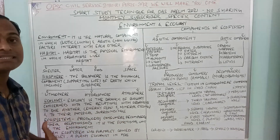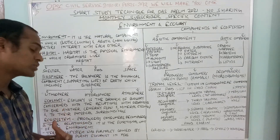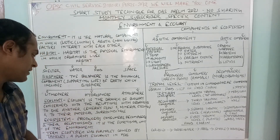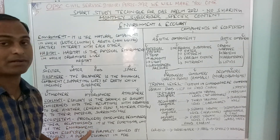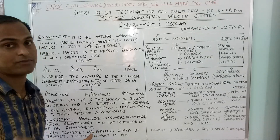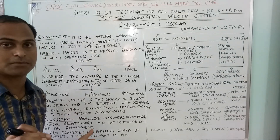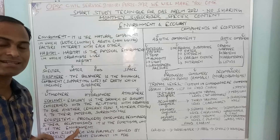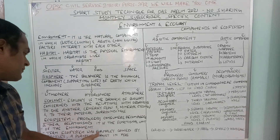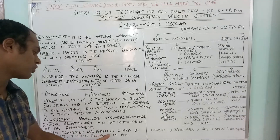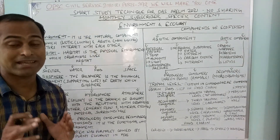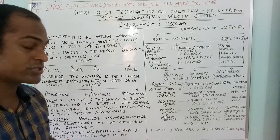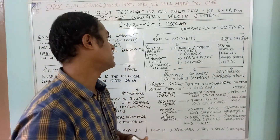An ecosystem is the relationship between producers, consumers, and decomposers — it is the functional unit of the environment. Remember this fact: ecosystem is the functional unit of environment. The term 'ecosystem' was first coined by Tansley, a plant ecologist, in 1935.